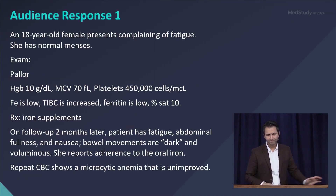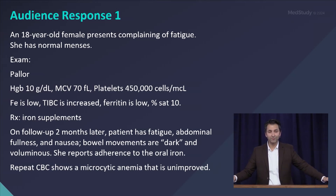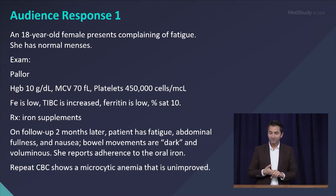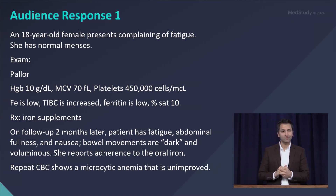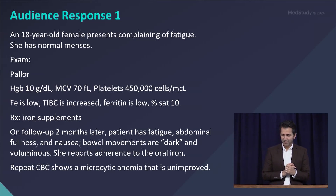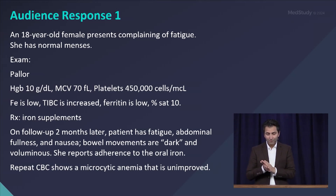Here is an audience response question: an 18-year-old female presents with fatigue, describes normal menses, and is visibly pale on exam. She has a hemoglobin of 10, MCV of 70, platelet count of 450, low serum iron, low ferritin, increased TIBC, and iron saturation of 10%. You correctly diagnose iron deficiency and prescribe once-daily oral iron. Two months later she returns feeling no better — possibly worse — with abdominal symptoms, dark bowel movements, and persistent anemia despite reported compliance.